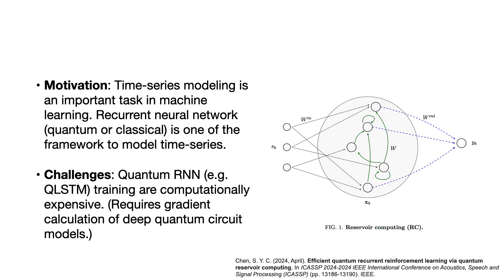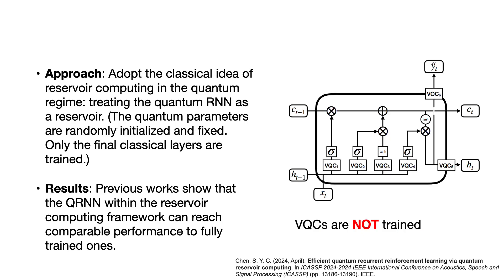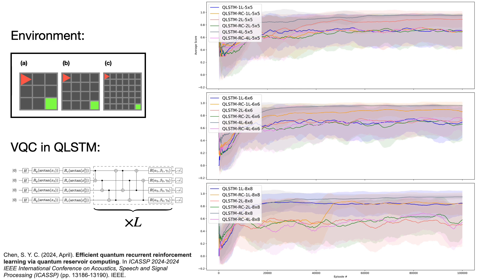Training recurrent neural networks is usually very difficult. An alternative that uses recurrence without backpropagation through time is reservoir computing — a method from classical machine learning where the recurrent network is randomly initialized and only the last linear layer is trained. Similarly, we use quantum LSTM but randomly initialize all the quantum neural networks and do not train them at all. On similar benchmarks, this approach reaches quite comparable performance to a fully trained quantum LSTM, without backpropagation through time.